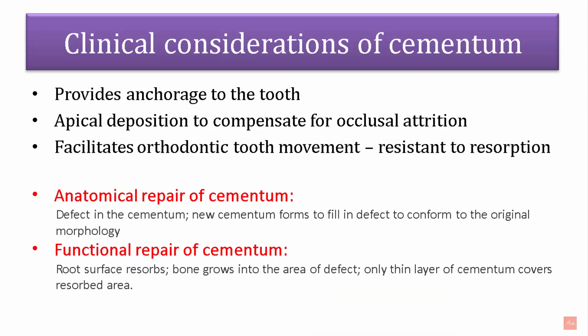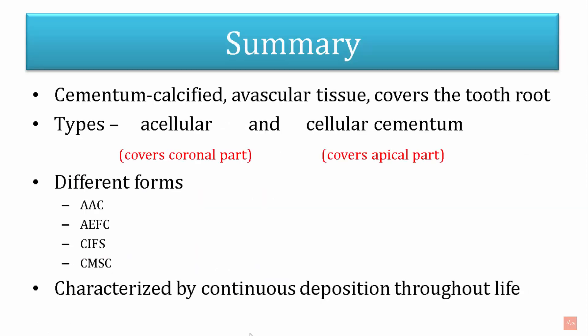Clinically, cementum provides anchorage by attaching periodontal ligament fibers and connecting the tooth to bone. Apical deposition compensates for occlusal attrition — cementum is deposited throughout life, so reduction in tooth height is compensated by apical cementum formation. Cementum is resistant to resorption, which facilitates orthodontic tooth movement with minimal loss of tooth structure. Anatomical repair is another function — when a defect forms, new cementum fills it. For large defects, cementum covers with a thin layer and bone grows in to complete functional repair.